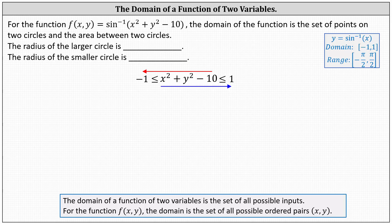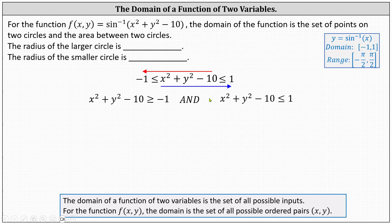In red, we have x² + y² - 10 ≥ -1, where the inequality still points toward -1. In blue, we have x² + y² - 10 ≤ 1. Now we solve both inequalities for x² + y² by adding 10 to both sides.